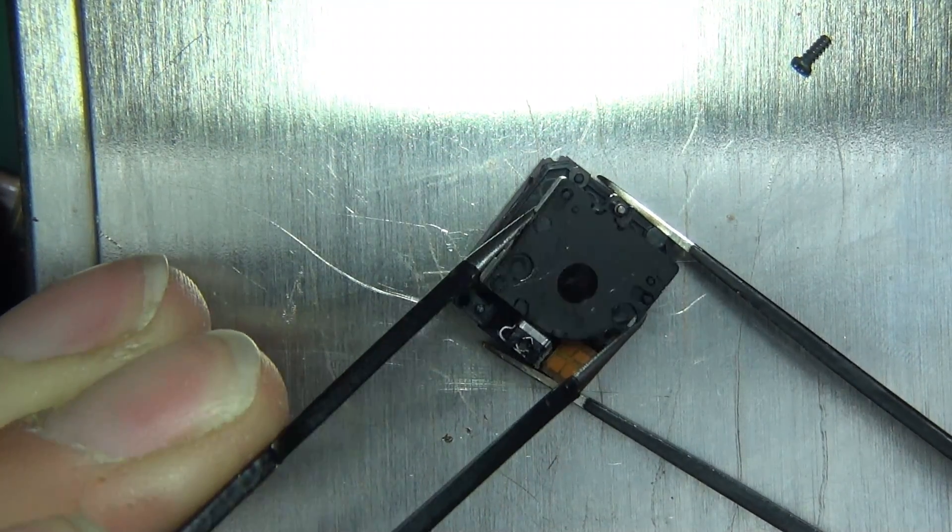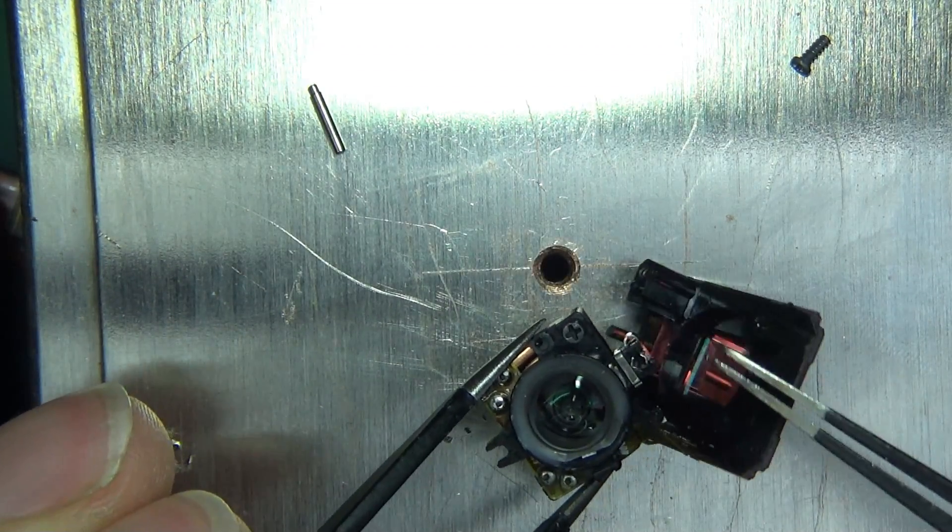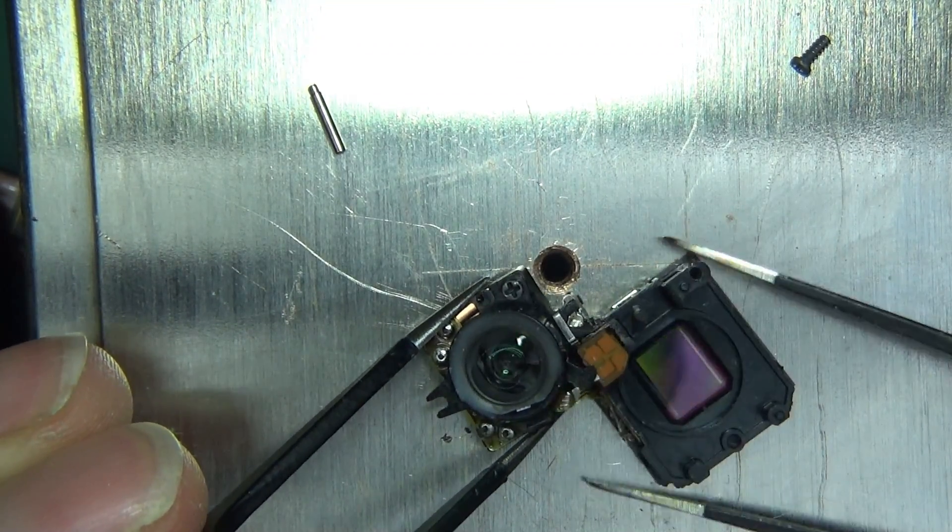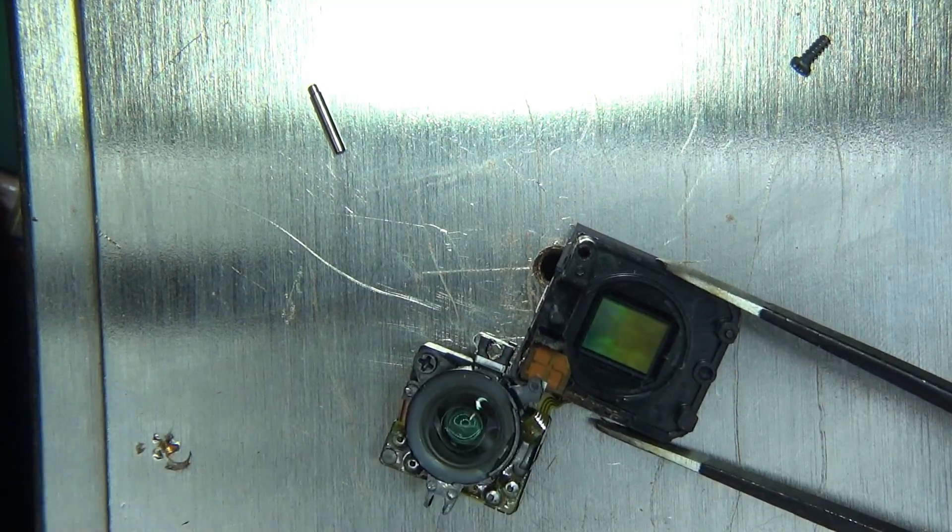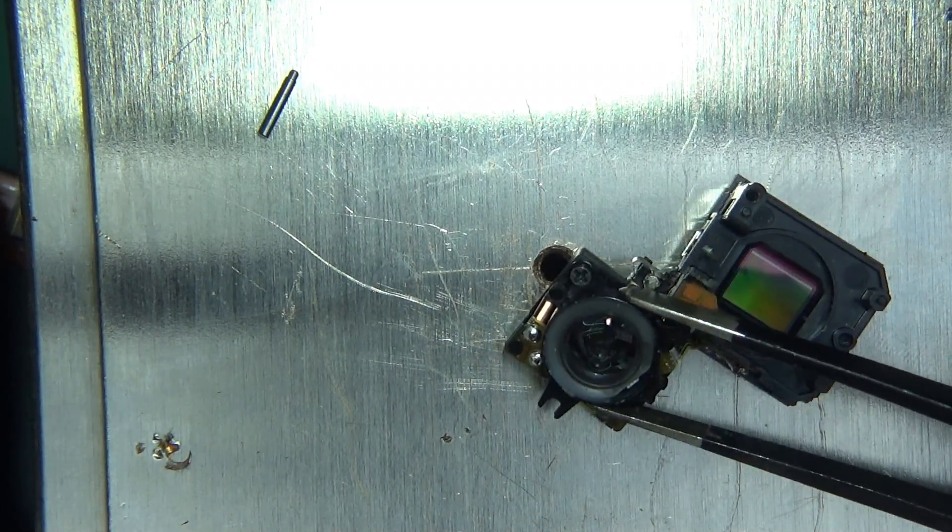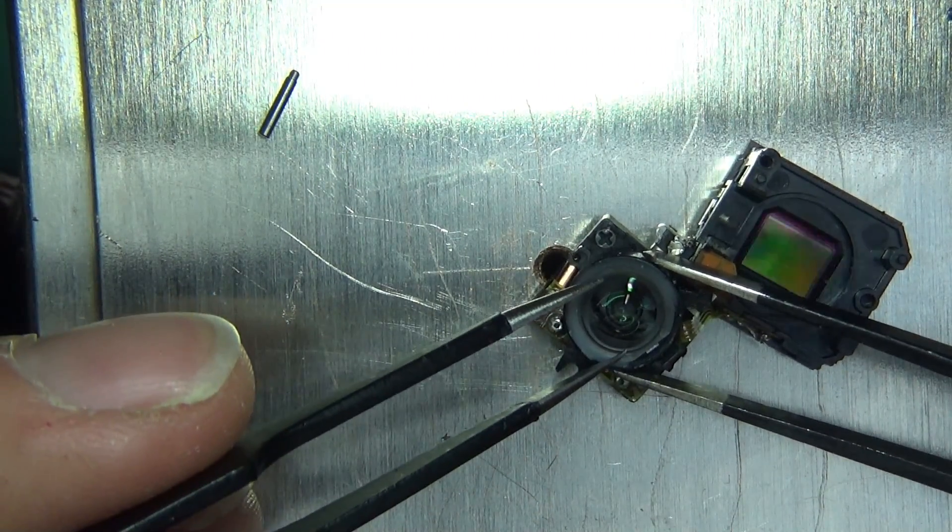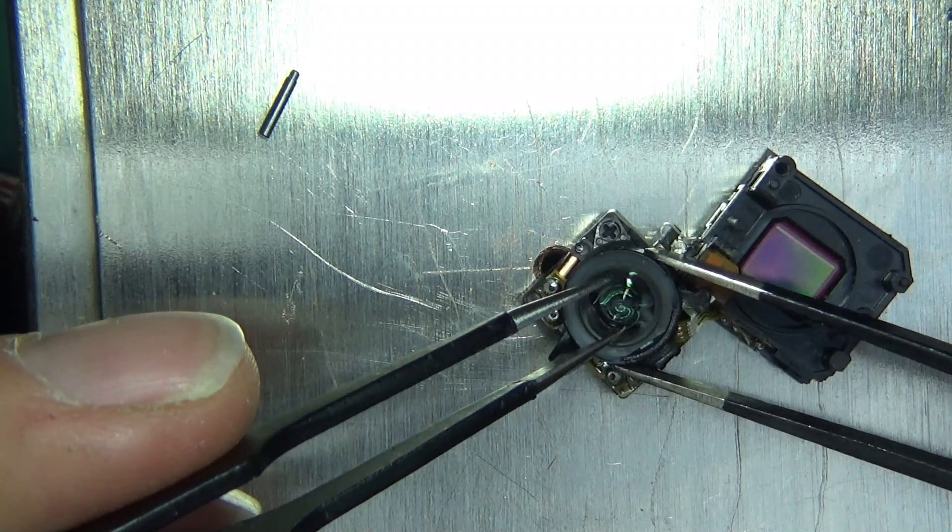And now this should come out. There we go. Oh, that's interesting. That lens has got the same sort of feature as the other one. We've got the sensor here with, I think, the infrared filter right above it.